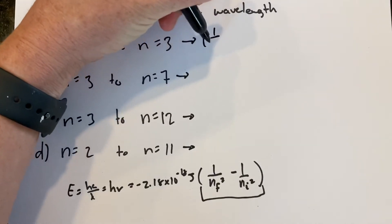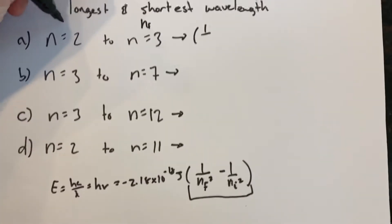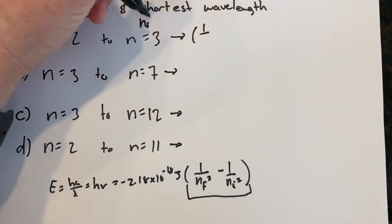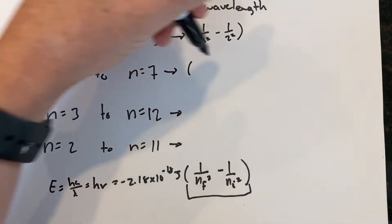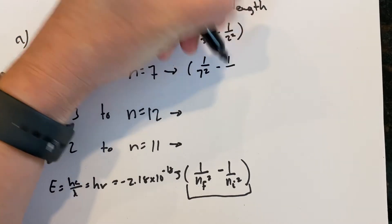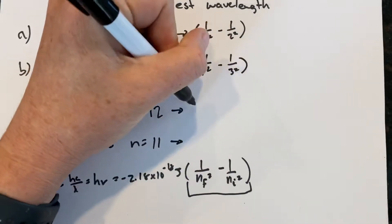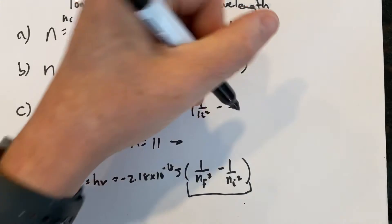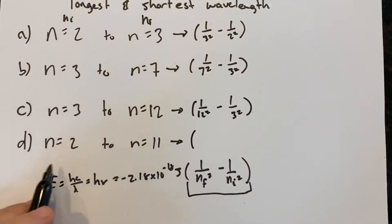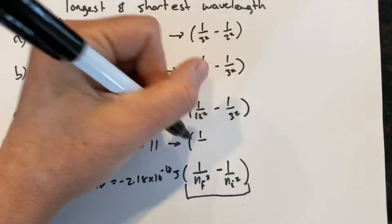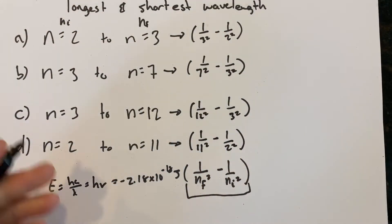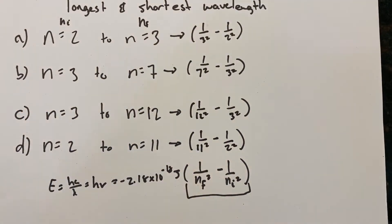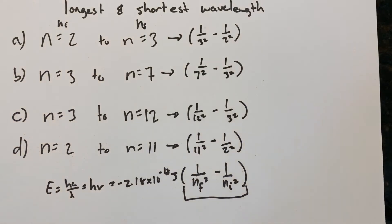So we'll use these as our n-finals and these as our n-initials. For the first transition: 1 over 3 squared minus 1 over 2 squared. For the second: 1 over 7 squared minus 1 over 3 squared. For the third: 1 over 12 squared. And for the fourth: 1 over 11 squared minus 1 over 2 squared. In cases where it's not obvious — mainly transitions C and D — you're going to want to do this comparison.